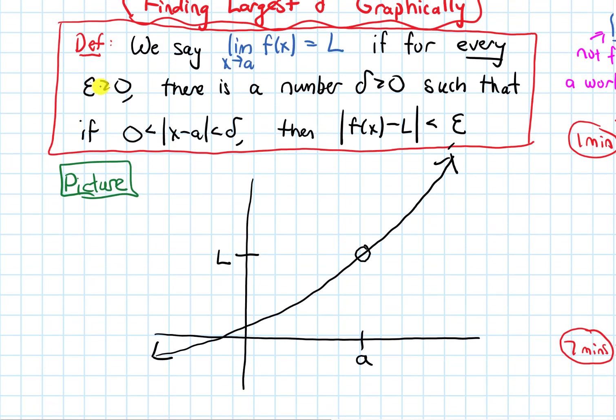So what this definition says is, for any epsilon that we pick, an epsilon represents the distance that the y values of our function, f(x), can be away from L. So if I go up epsilon from L or down epsilon from L, I would end up at L plus epsilon or L minus epsilon. So if I consider that range of y values, and I'm going to draw some horizontal lines here, I call this range of y values an epsilon window.